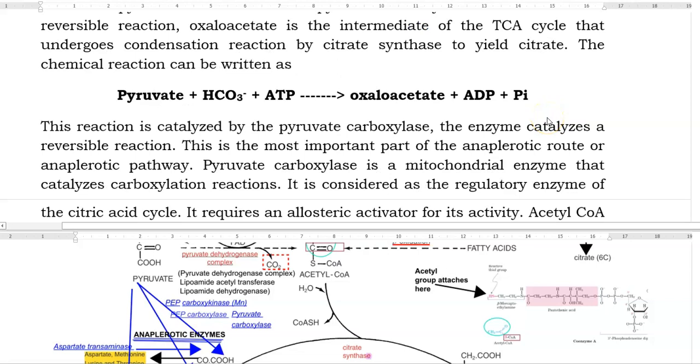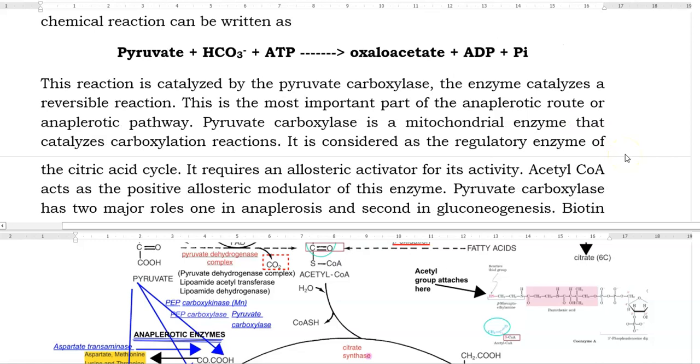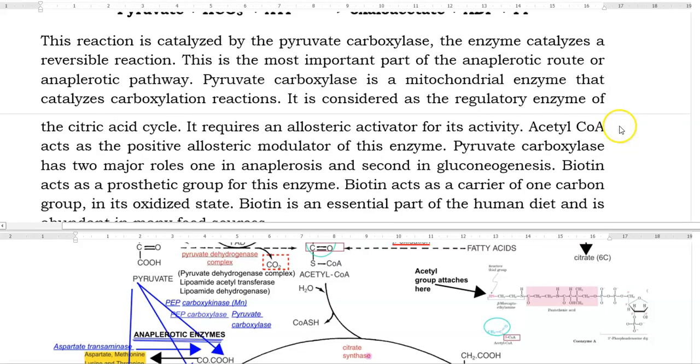This reaction is catalyzed by pyruvate carboxylase enzyme. The enzyme catalyzes reversible reactions also. This is the most important part of the anaplerotic route or anaplerotic pathway. Pyruvate carboxylase is a mitochondrial enzyme that catalyzes carboxylation reactions and it is considered as a regulatory enzyme of the citric acid cycle. It requires an allosteric activator for its activity which is acetyl-CoA which acts as a positive allosteric modulator of this enzyme.